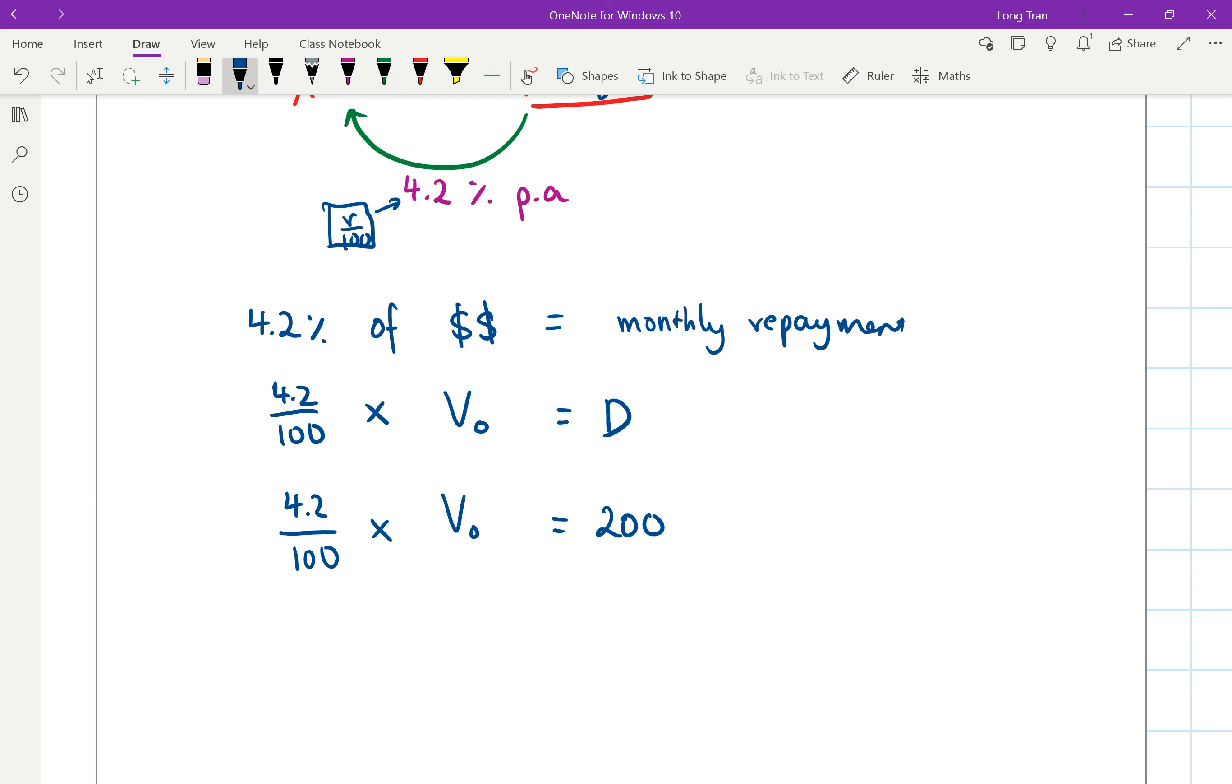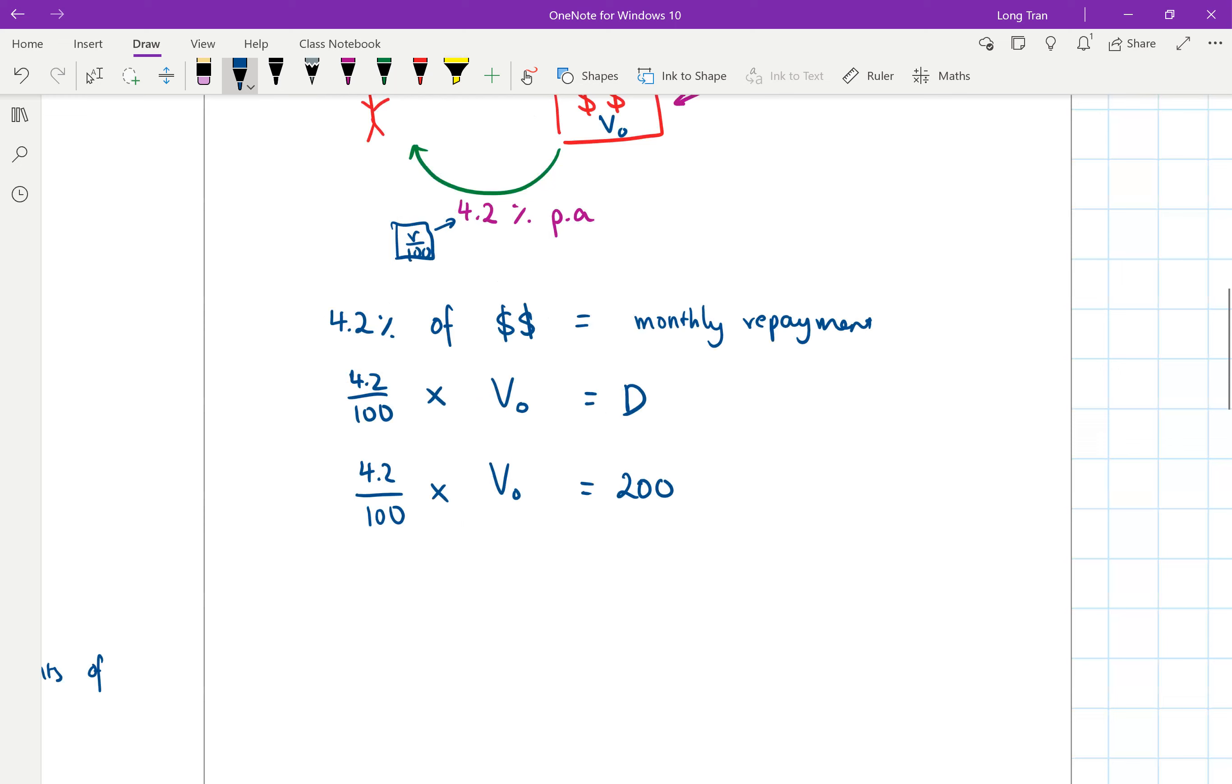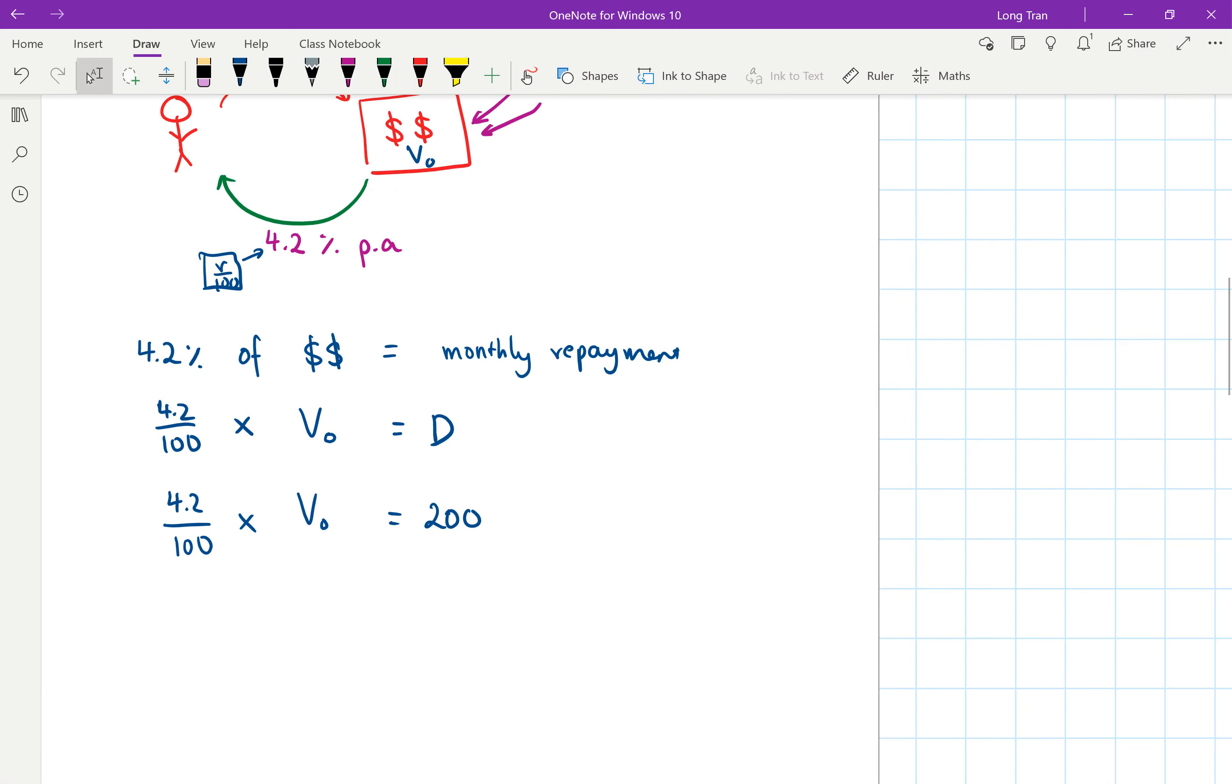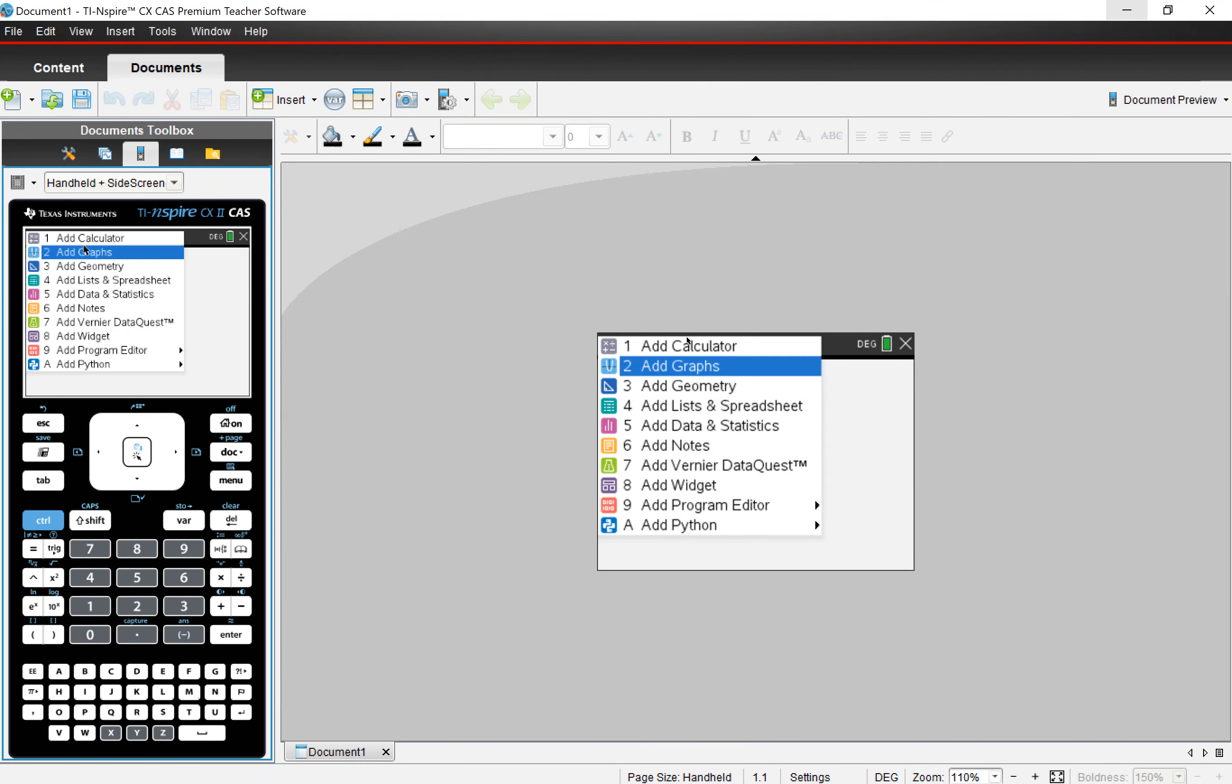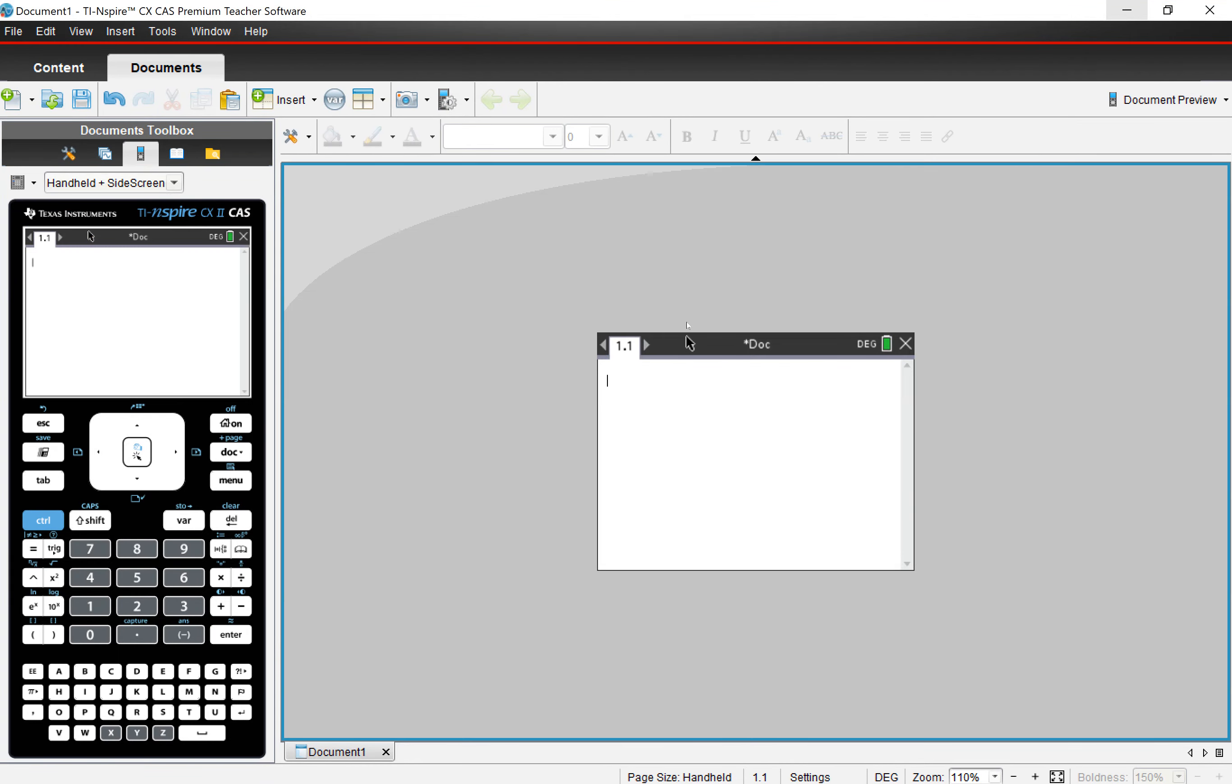Now on our CAS you can do this by hand as well, you can solve it, or you can do it on your CAS. I'm just going to quickly show you what I would have done. I would have just done my CAS and I would have said solve, so menu, algebra, 3, and then number 1.